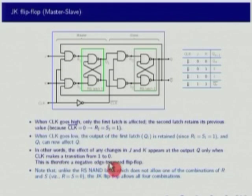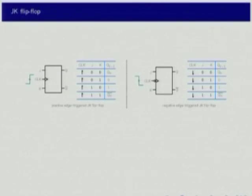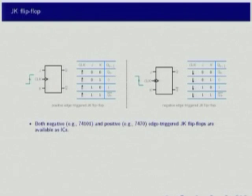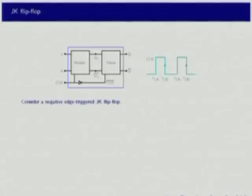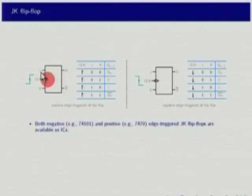Unlike the RS NAND latch which does not allow one combination of R and S (R equal to S equal to 0), the JK flip-flop allows all four combinations - that is a very big difference. Positive edge triggered and negative edge triggered flip-flops have basically identical transition tables except the active edge is positive in one and negative in the other. The symbols are different: no circle for positive edge clock; a circle for the negative edge clock.